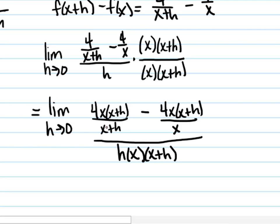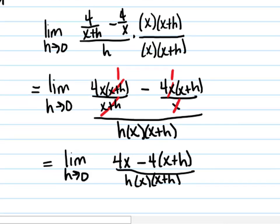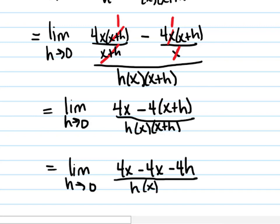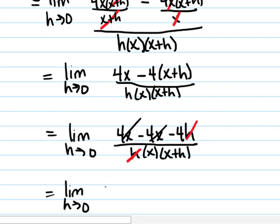Let's simplify. x plus h divided by x plus h leaves 1, and x divided by x leaves 1 — so we see why we did what we did: the fractions cancel out. We're left with the limit as h goes to 0 of 4x minus 4 times x plus h, all over h times x times x plus h. Distributing the negative 4 in the numerator, we have the limit as h goes to 0 of 4x minus 4x minus 4h, all over h times x times x plus h. 4x minus 4x leaves 0, and then the factor of h in the numerator cancels with the h in the denominator. So we're left with the limit as h goes to 0 of negative 4 over x times x plus h.